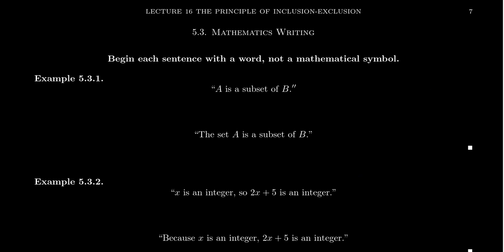So let's look at a few examples here. So one sentence would be A is a subset of B. That's a reasonable mathematical sentence. But again, to avoid starting with a mathematical symbol, we could improve it by saying instead, the set A is a subset of B.